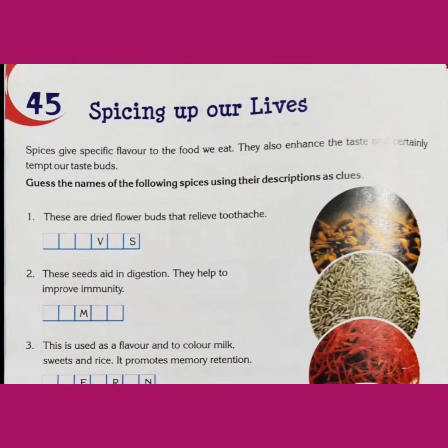Spice number four: This adds yellow color to food. It is helpful in healing cuts, wounds and bruises. ये खाने में पीला रंग लाता है और कट जाने, घाव होने या चोट लगने पर हम इसका इस्तेमाल करते हैं — ये एक antiseptic भी होता है। इसे हम TURMERIC कहते हैं। T-U-R-M-E-R-I-C, turmeric. हिंदी में इसे हल्दी कहते हैं।